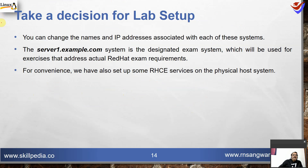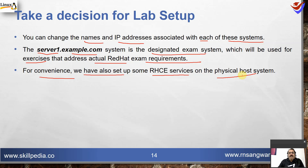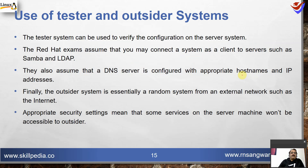You can change the names and IP addresses associated with each of these systems. The server1.example.com system is designated as the exam system, which will be used for exercises addressing actual Red Hat exam requirements. For convenience, some RHEL services are also set up on the physical host machine — for example, an FTP server and Apache server — to provide a network repository for network-based installation.